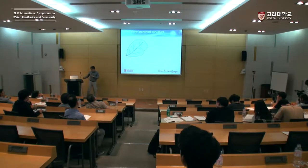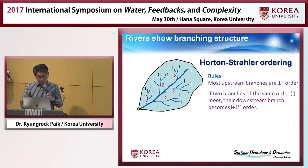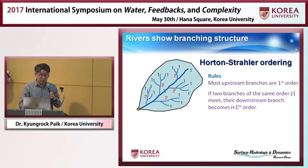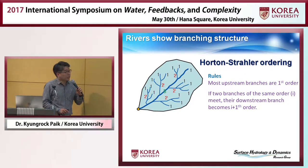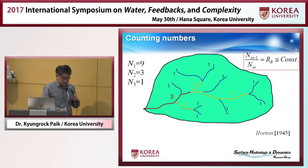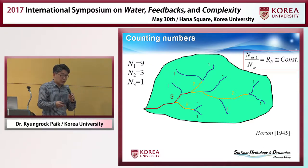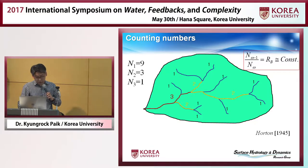We have a very effective ordering scheme to systematically analyze river networks, called Horton-Strahler ordering. The rule is very simple: we label the most upstream branches as order number one. When branches of the same order meet, their downstream becomes one order higher. So these become second order and third order. Using this scheme, for example, you can count the number of first, second, and third order streams. In this example, there are nine first-order streams, three second-order streams, and one third-order stream.